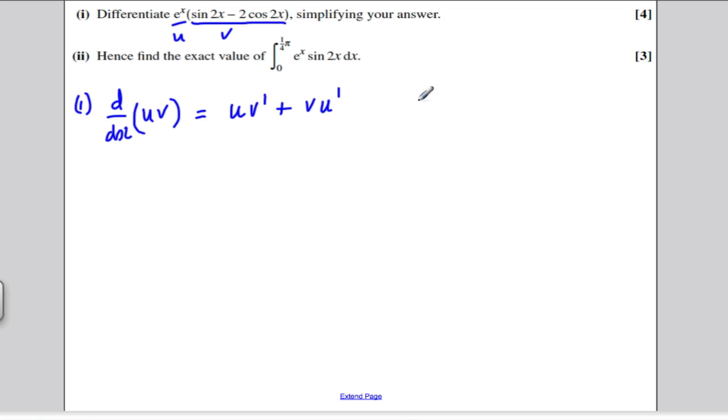So we're going to lay things out nice and neatly. We're going to say that u equals e to the x, so therefore u dashed, the differential of e to the x is e to the x. That's what makes the exponential function so special. Its gradient function is the same as the actual function.